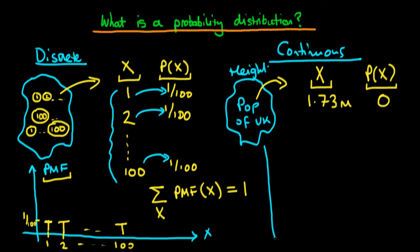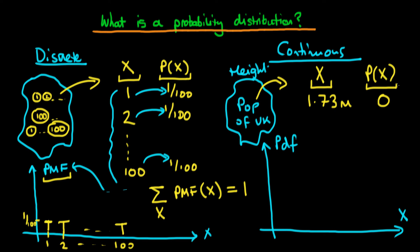The way we get around this is via a probability density function, or PDF — the continuous analogue of a PMF for a discrete random variable. We can draw a PDF that looks something like a curve, centred around perhaps 1.6 metres, and then interpret how to use it to calculate meaningful probabilities.